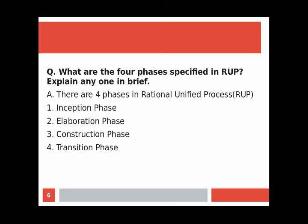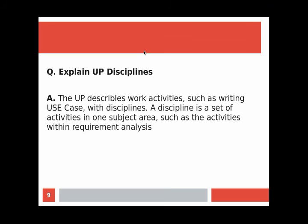The elaboration phase involves key activities as primary work items in the phase. Similarly, the construction phase has primary work items focused on building the product, and the transition phase involves primary work activities for deploying the product to users — each phase's key activities should be mentioned in your answer.